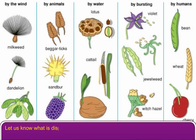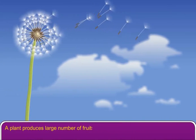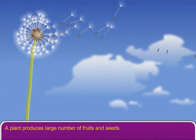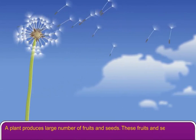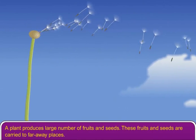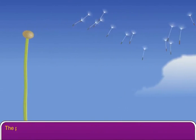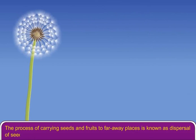Let us know what is dispersal of seeds. A plant produces a large number of fruits and seeds. These fruits and seeds are carried to faraway places. The process of carrying seeds and fruits to faraway places is known as dispersal of seeds.